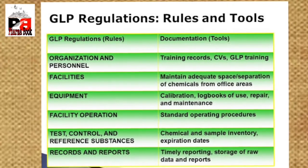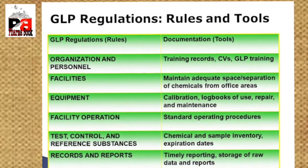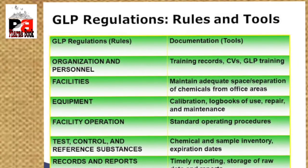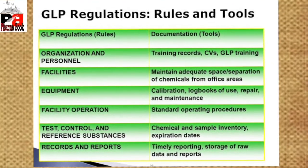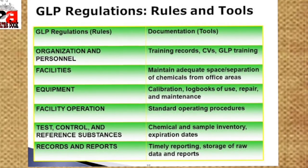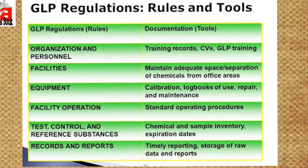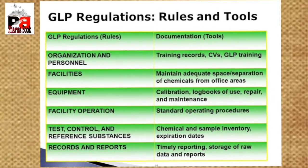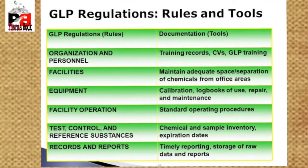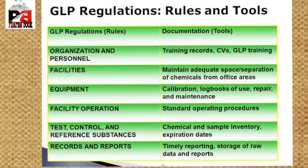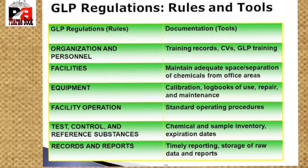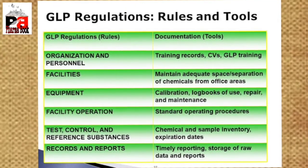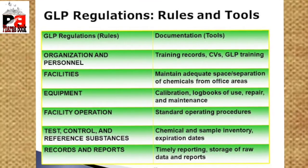Number two, Facilities: the laboratory facility must have chemical separation, proper ventilation, and must be hygienic. Number three, Equipment: instruments require preventive maintenance, calibration, and log book maintenance. Number four, Facility Operations: SOPs and protocols must be maintained and the facility must be run accordingly. Number five is Test Control and Reference Substances.